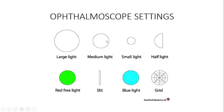Use the medium light when the pupil is normal size but the person is in a dimly illuminated room. Use the small light when no mydriatics have been used and the patient being examined is in a very bright place — in that case use the small light.